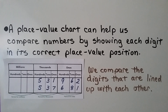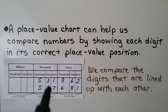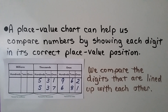A place value chart can help us compare numbers by showing each digit in its correct place value position. We compare the digits that are lined up with each other. They both have a five in the hundred thousands place and a three in the ten thousands place, but in the one thousands place there's a one and a seven. So we know the second number is the greater number.